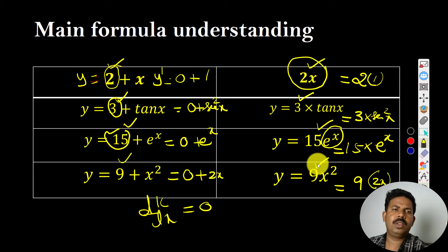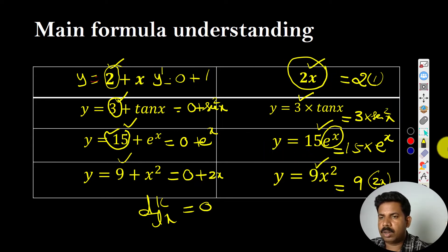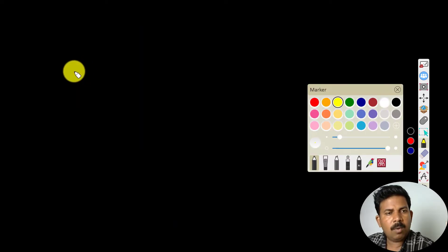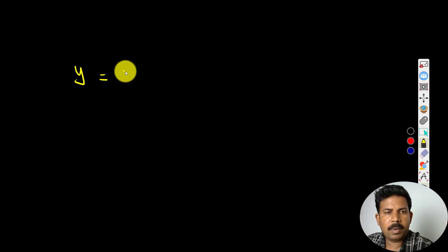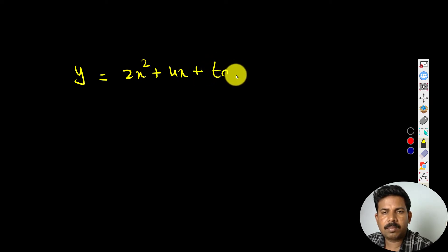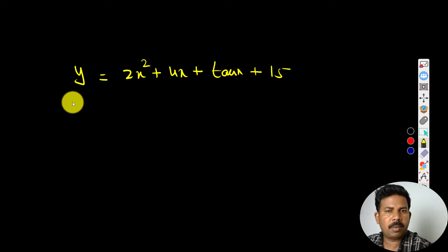This is the main thing you have to understand between the two: one constant and one variable. Hope you understood this one. Let's move on to one page. That is nothing but y is equal to some value. For example, 2xy plus 4x plus tan x plus 15. It is one algebra type of problem.